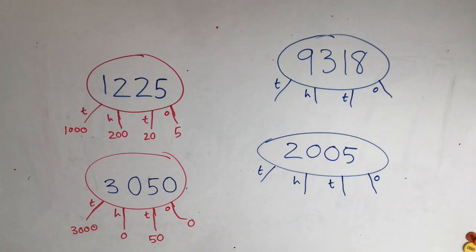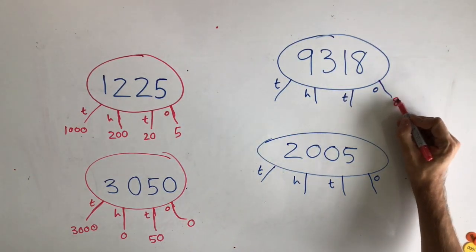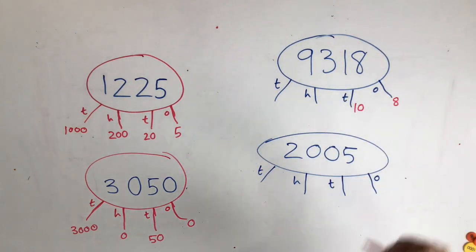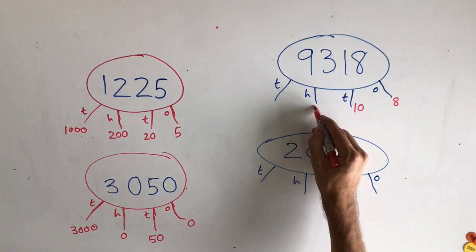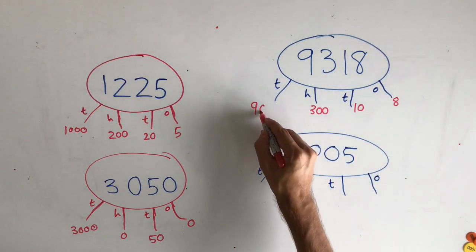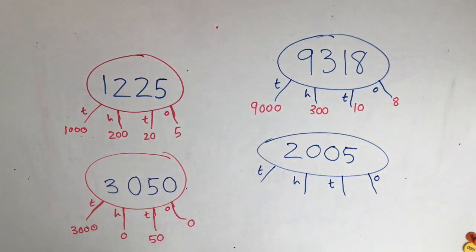Let's look at the other one. There's 8 ones. There's 1 ten which is 10. We've got 3 hundreds so it's 3 hundreds and 9 thousands so it's 9,000.